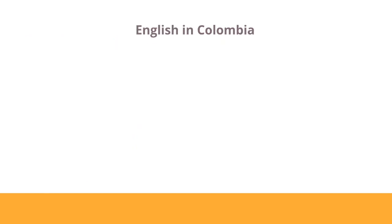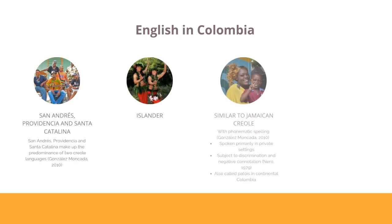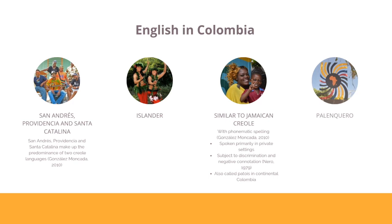So how did English come to Colombia? Well, it came to Colombia through the Caribbean islands of San Andres, Providencia and Santa Catalina, which together make up two variations of English — one called Islander and the other one called Palenquero. The Islander dialect resembles that of Jamaican English, but using phonemic spelling to transliterate utterances.